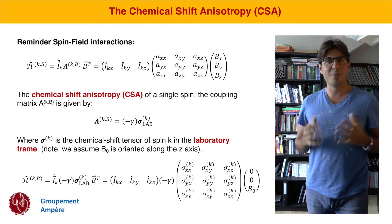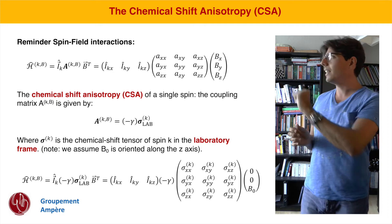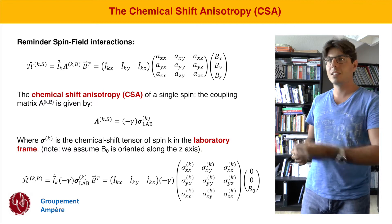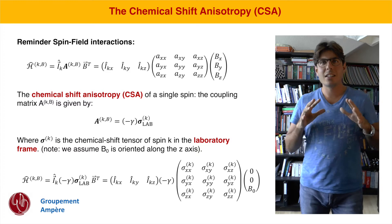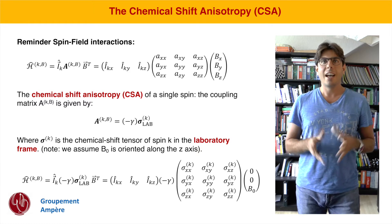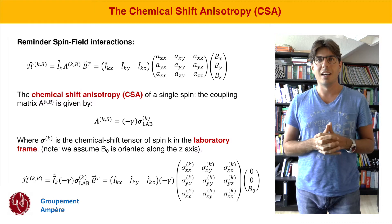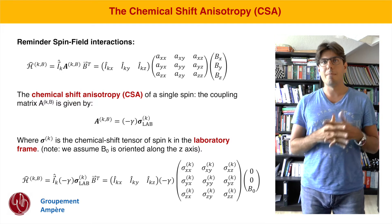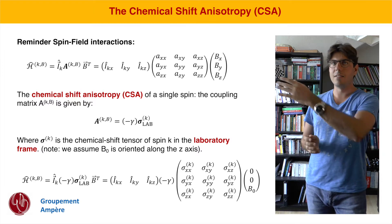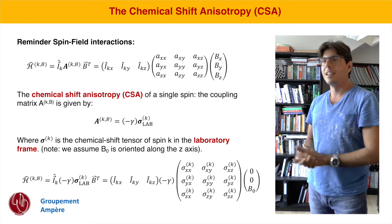What we have on this slide is a small reminder of what we did last time: the general expression for a spin-field interaction. We have the multiplication of the spin operator vector (Ikx, Iky, Ikz) times a coupling matrix — different for each interaction — times the magnetic field vector. We want to derive the general expression for the chemical shift Hamiltonian by plugging in the coupling matrix for chemical shift, which is given by minus the gyromagnetic ratio gamma times the chemical shift matrix sigma — a three-by-three matrix with entries sigma_xx, sigma_xy, and so on.